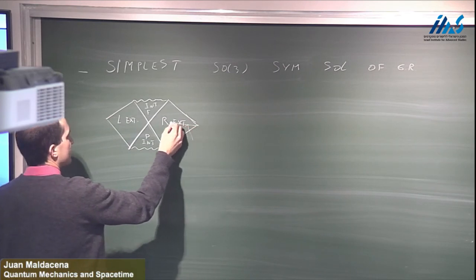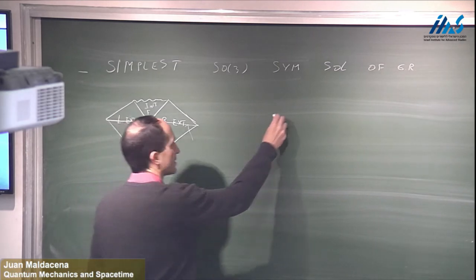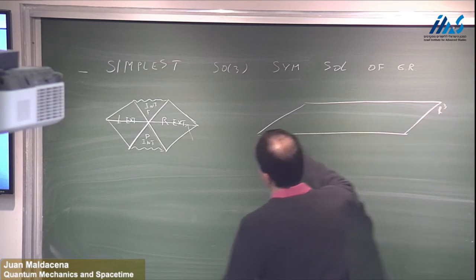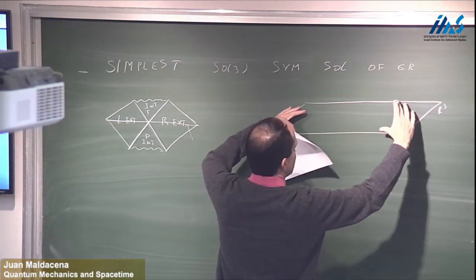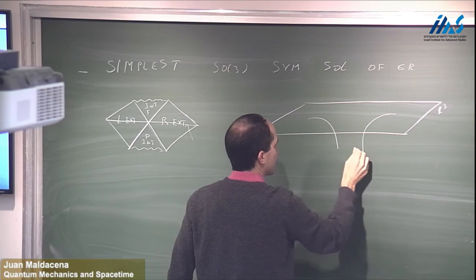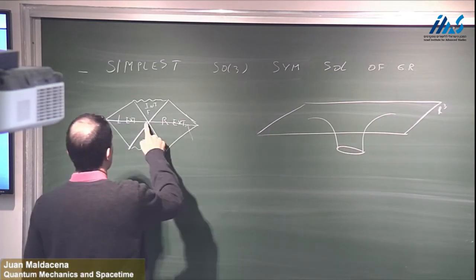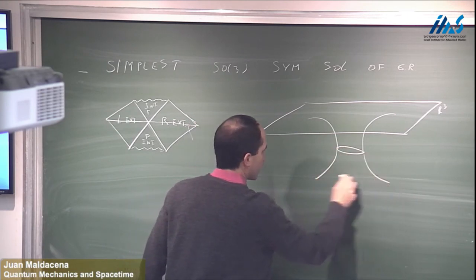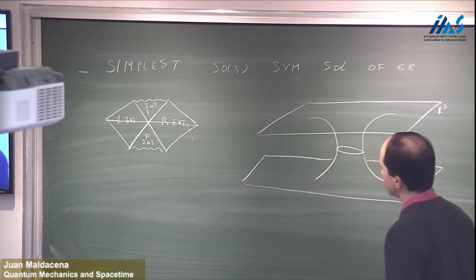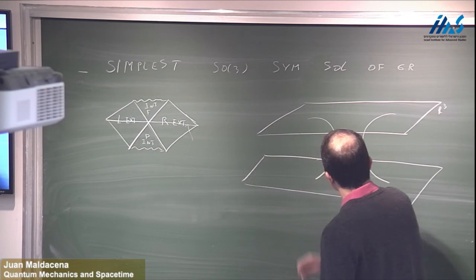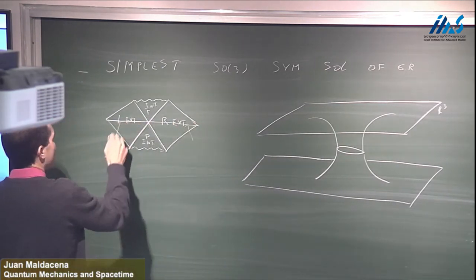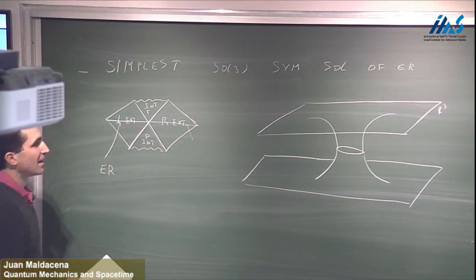If you look at the spatial section, it has the geometry of R3 far away. As you go along the radial direction, the spheres shrink to a minimum value at the horizon, and then they continue to expand in the other direction into a second R3. This peculiar geometry is sometimes called the Einstein-Rosen bridge.